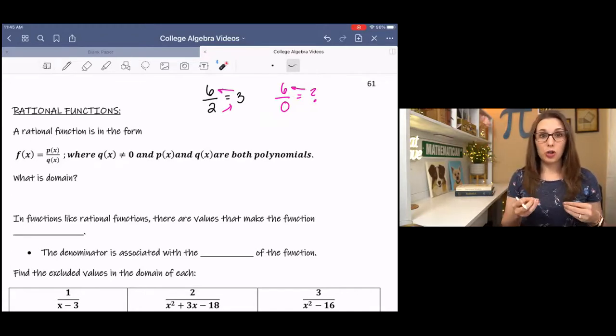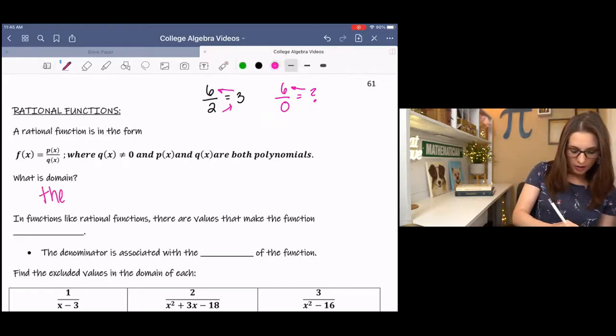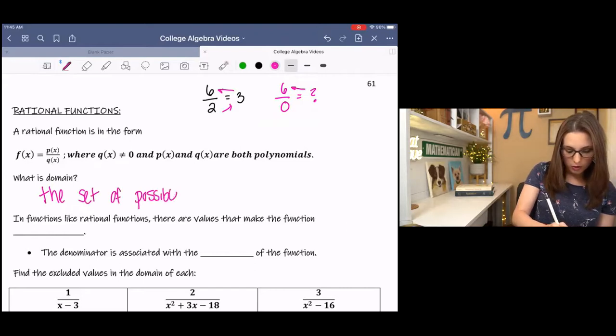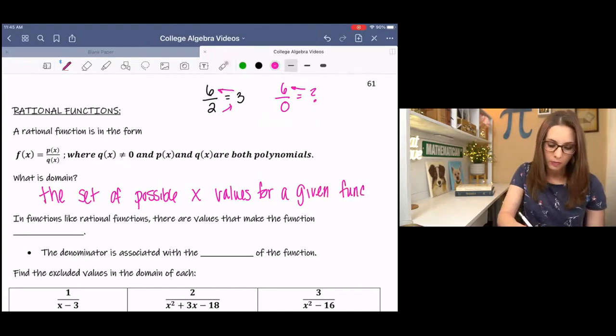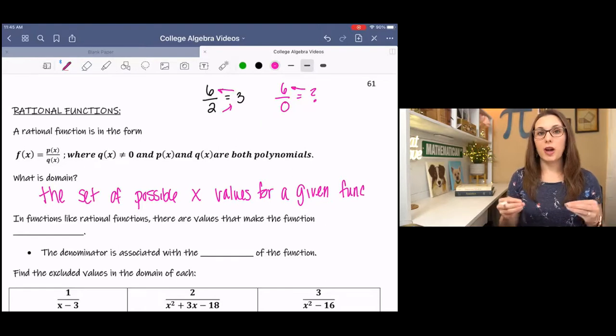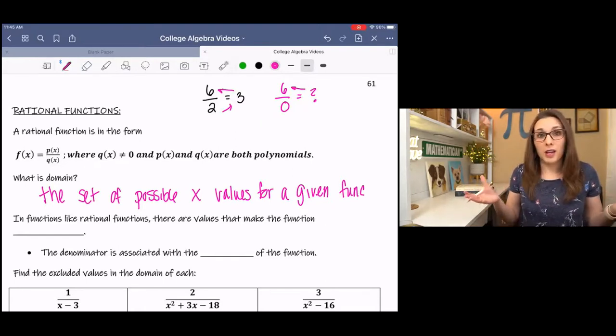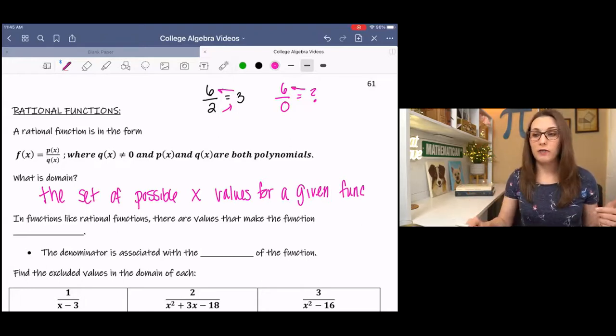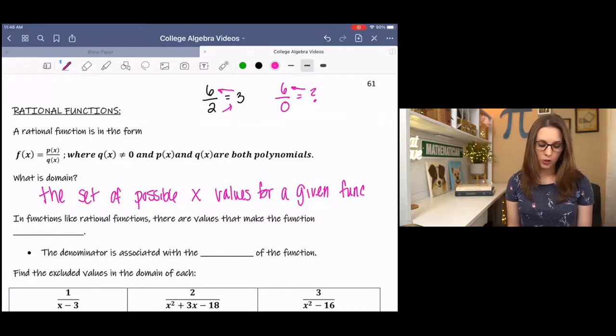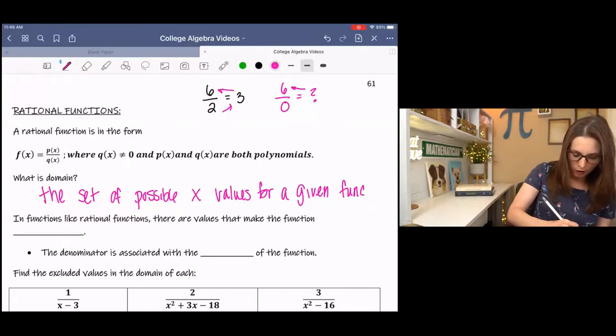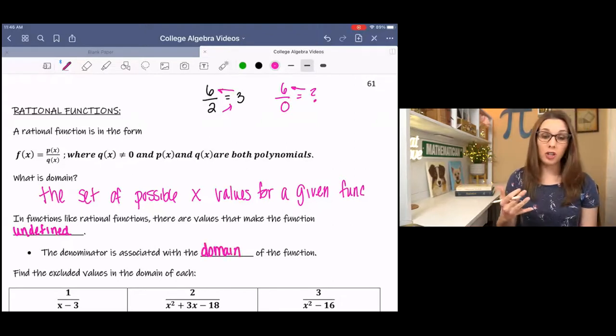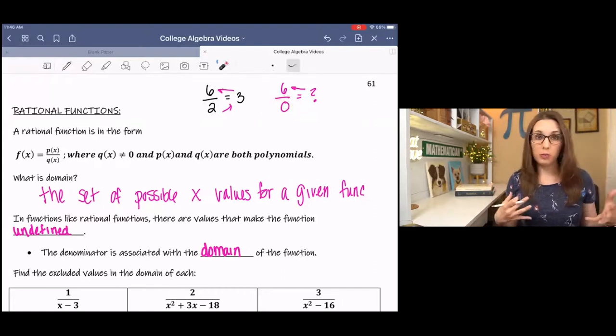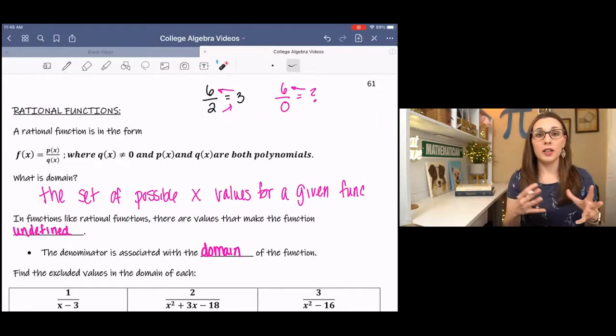So we relate that to domain. Domain is the set of possible x values for a given function. And when we're talking about the set of possible x values, we're talking about what values of x can we plug into the function. Where can we evaluate that function for x? In functions like rational functions, there are values that make the function undefined. The denominator is associated with the domain of the function because that's the place in our function that's going to create problems. If it's 0, then we have an undefined point in the graph.